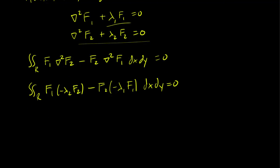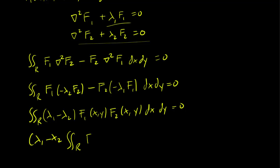Remember that F1 and F2 are functions of x and y, and lambda1 and lambda2 are constants. After substitution, both terms have F1 and F2 in them, so we can factor them out. This gives us the double integral of F1(x,y) times F2(x,y) dx dy, multiplied by lambda1 minus lambda2, equals 0. Since lambda1 and lambda2 are constants, we can pull lambda1 minus lambda2 out of the integral.